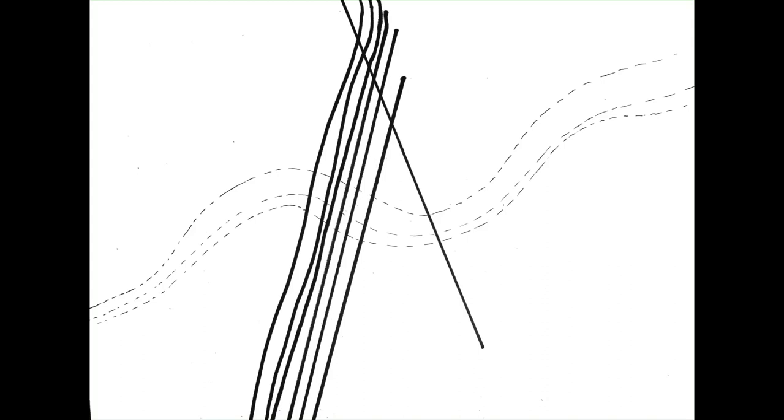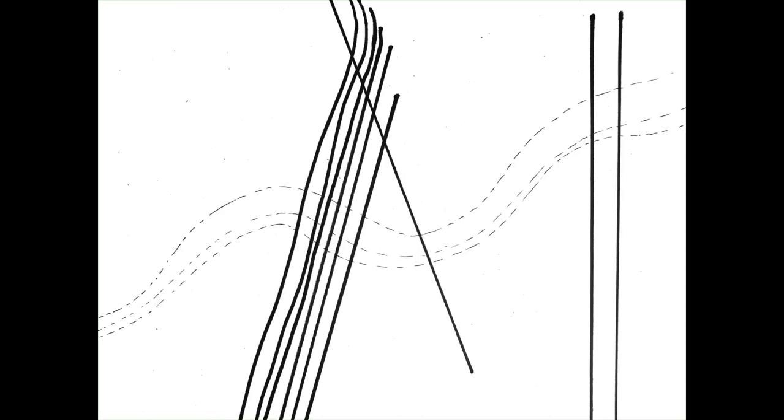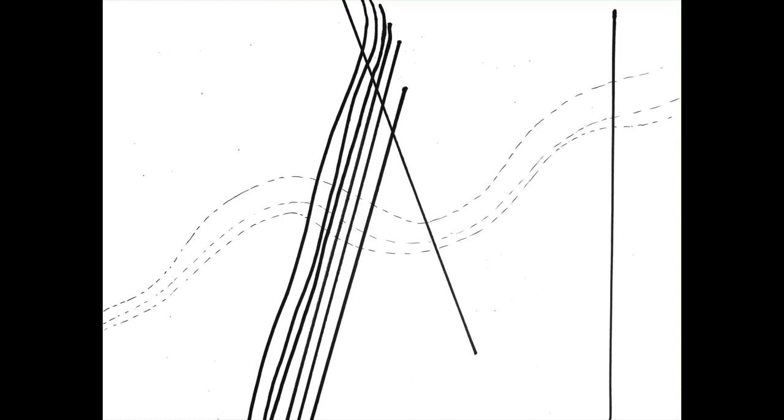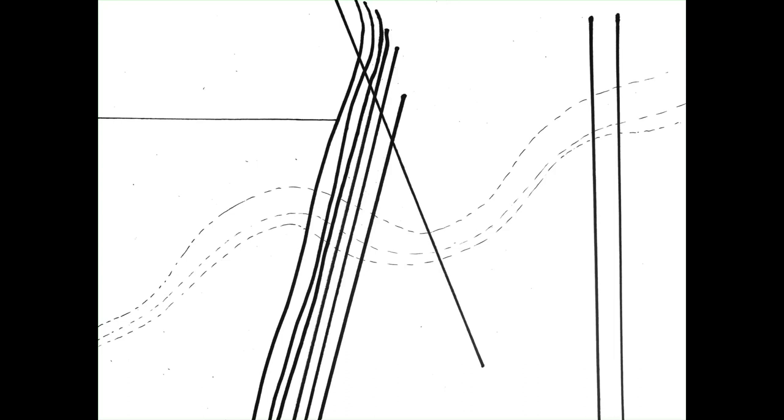The more lines you have in one area, that reads as a shadow or a darker value. When you have less lines, so there's more white paper, less mark there, that reads as a gray or even like a lighter value or white when there's no lines at all. That's density. Optical mixing is the amount of lines within a certain area to create a black, gray, or white.